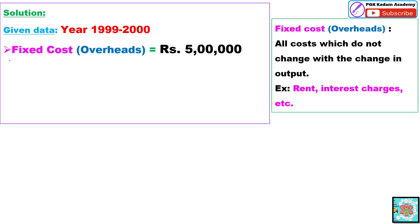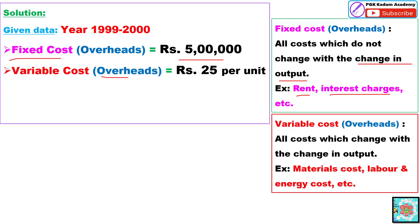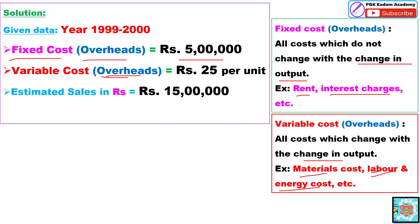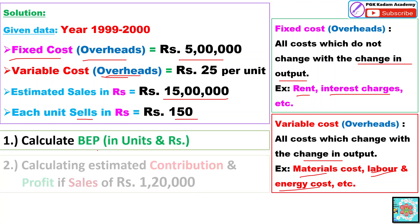The fixed cost is given for this year, that is 5 lakh. Fixed cost is the cost which does not change with respect to time — that cost will not change. For example, rent is fixed, interest charges are also fixed. Similarly, variable cost overheads is the cost which will change with the output. Material cost and labor cost are going to change with the change in output. Energy cost is also included in the variable cost. These are the overheads. Estimated sales is rupees 15 lakh, and each unit sells at rupees 150.